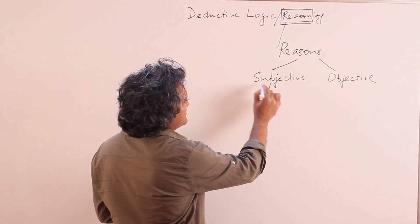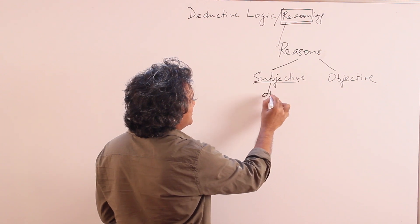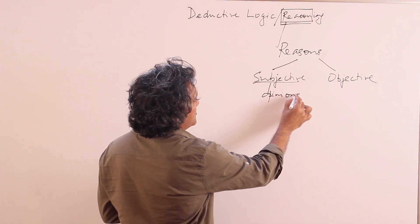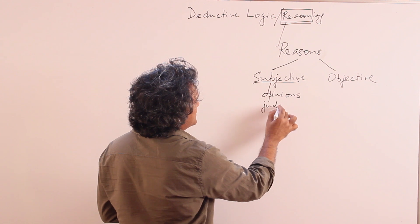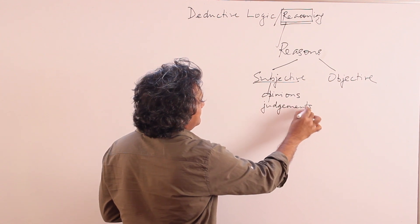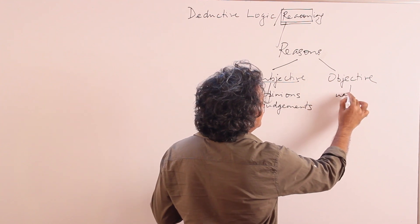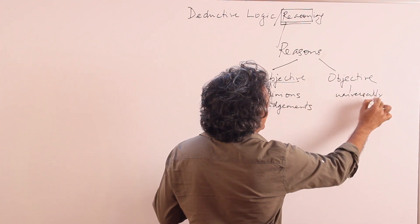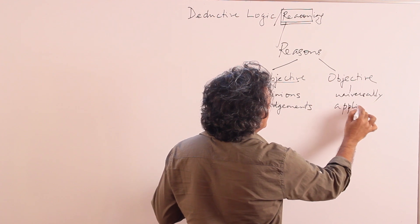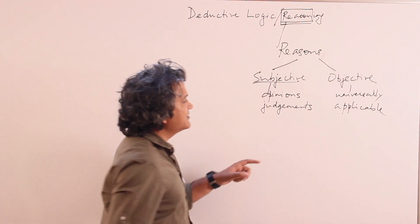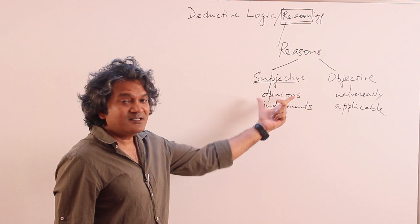So subjective reasoning, or subjective reasons, you can call as based on opinions or judgments. Whereas objective reasons are independent of these and so they are universally applicable rather than depending on the subject.